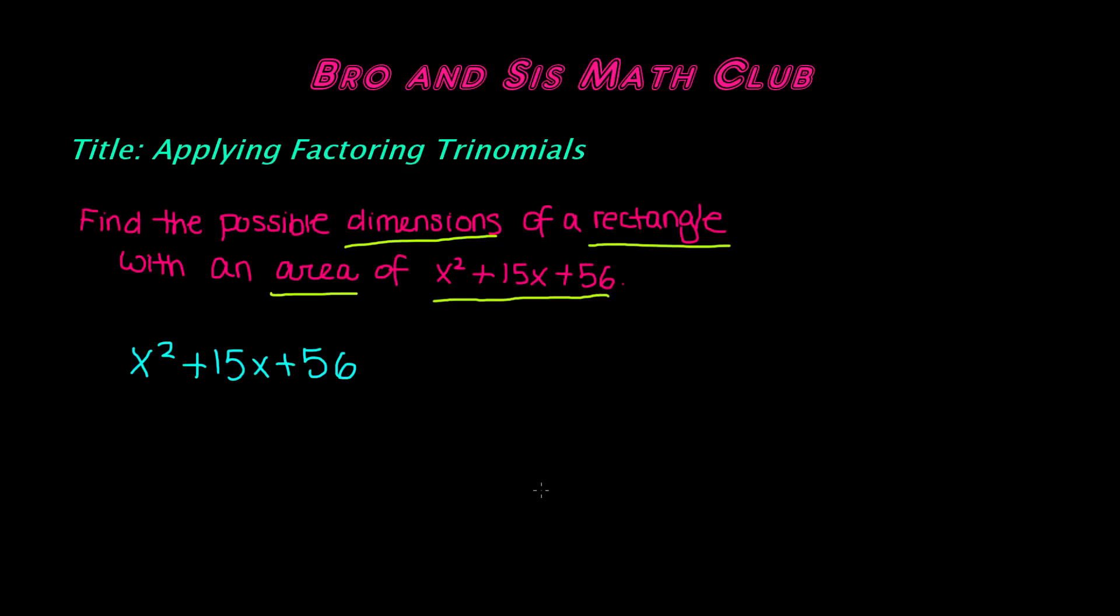Here we have the word problem which says, find the possible dimensions of a rectangle with an area of x squared plus 15x plus 56. So we've been given the area of the rectangle, which is this trinomial, also known as a polynomial, x squared plus 15x plus 56,